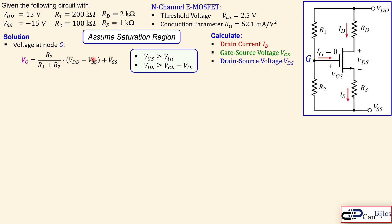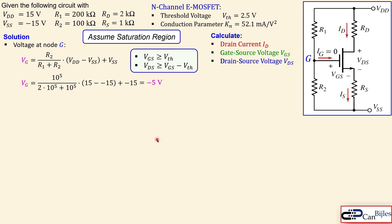Substituting the given component values into the voltage divider expression gives us Vg = −5 volts. Note that this node being at −5 V does not mean the MOSFET is off — we have a threshold of 2.5 V, but we need to check vgs, not just vg, before drawing any conclusions.